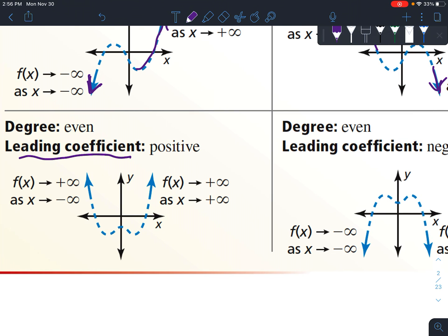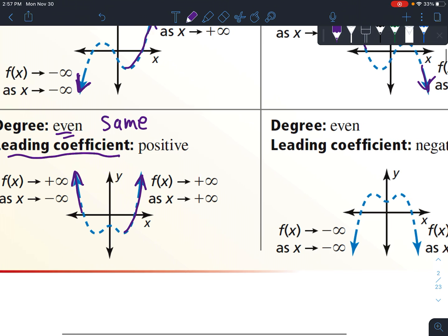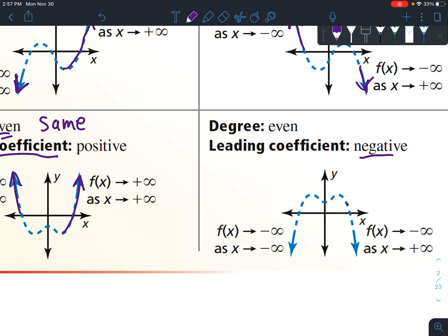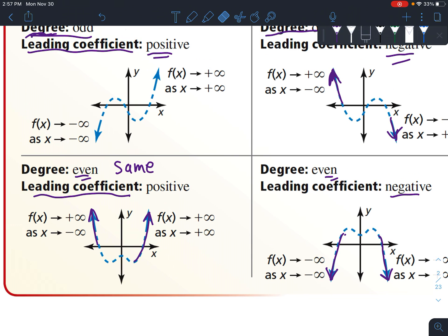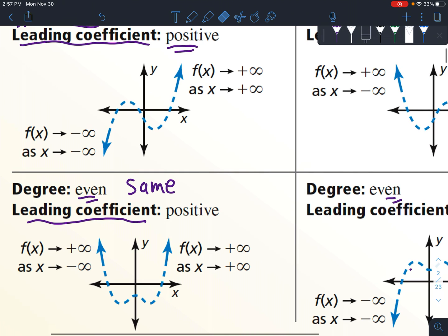When the leading coefficient is positive, the graph still goes up at the right end. When the degree is even, both sides are the same — so it goes up on the left and up on the right. When it's negative and even, it goes down at both ends. The dotted lines in the middle of the diagram mean that we only know the end behavior from what we just talked about — we don't know what happens in the middle yet.